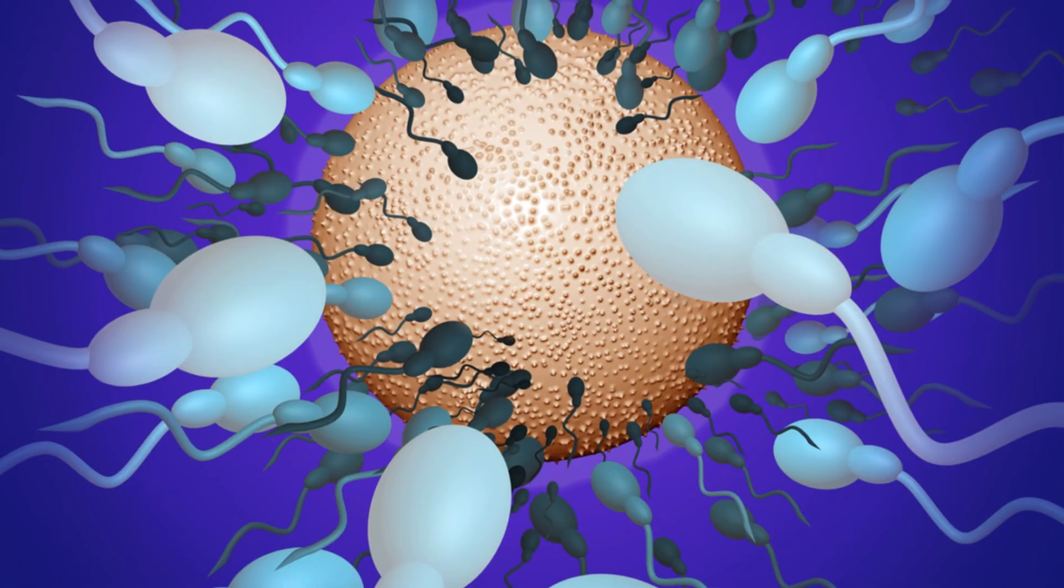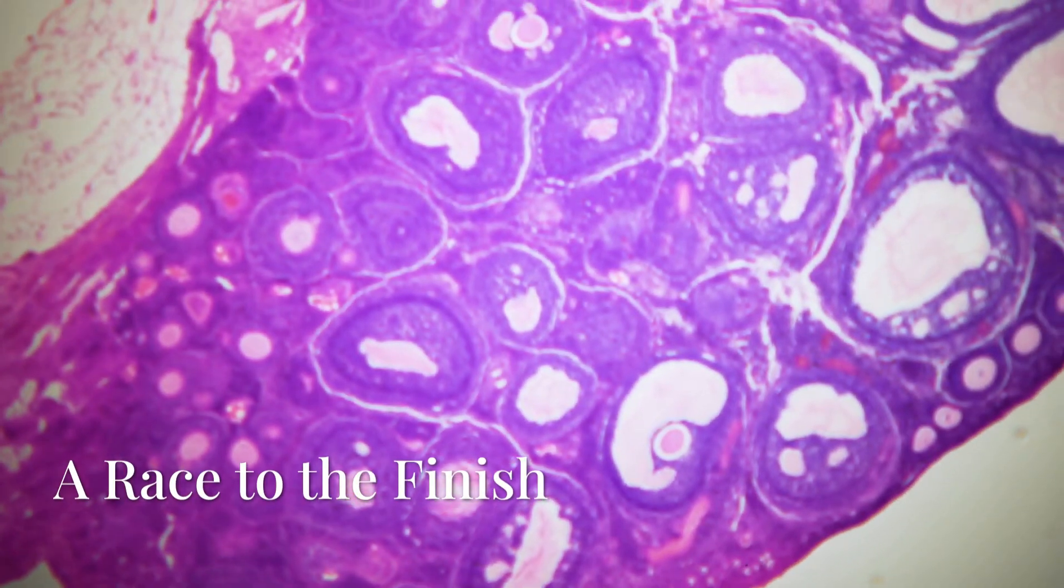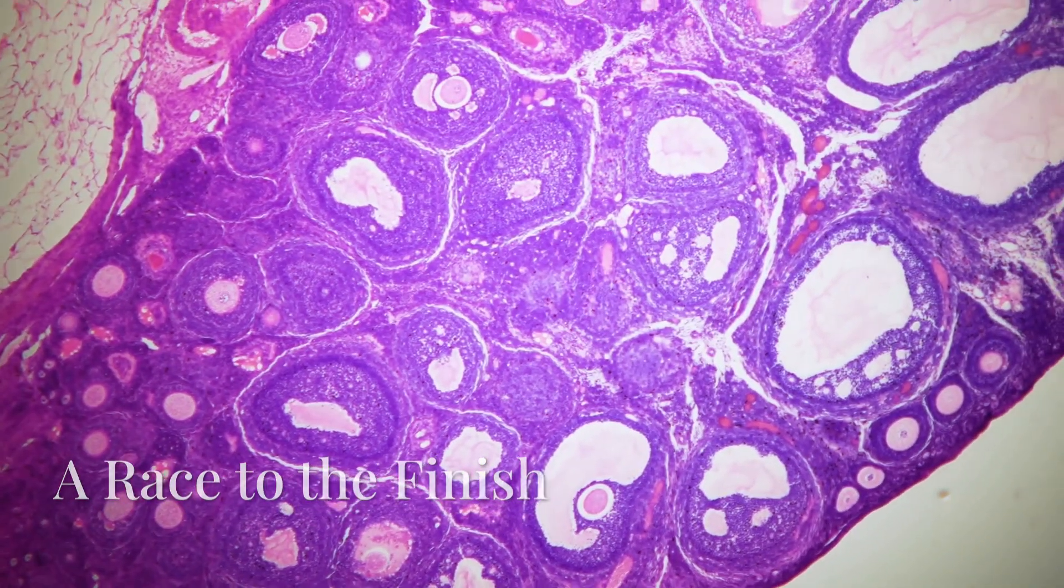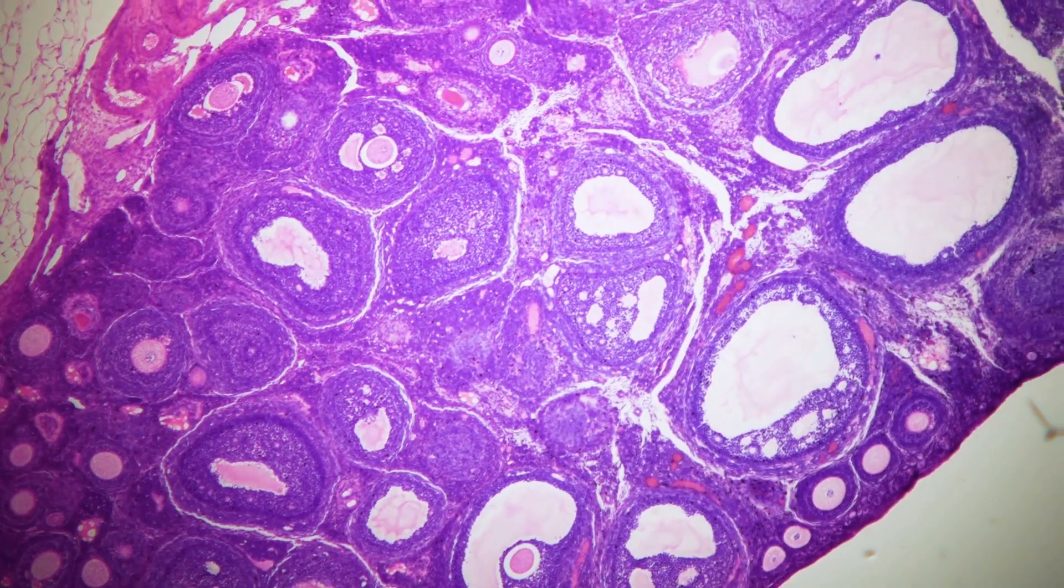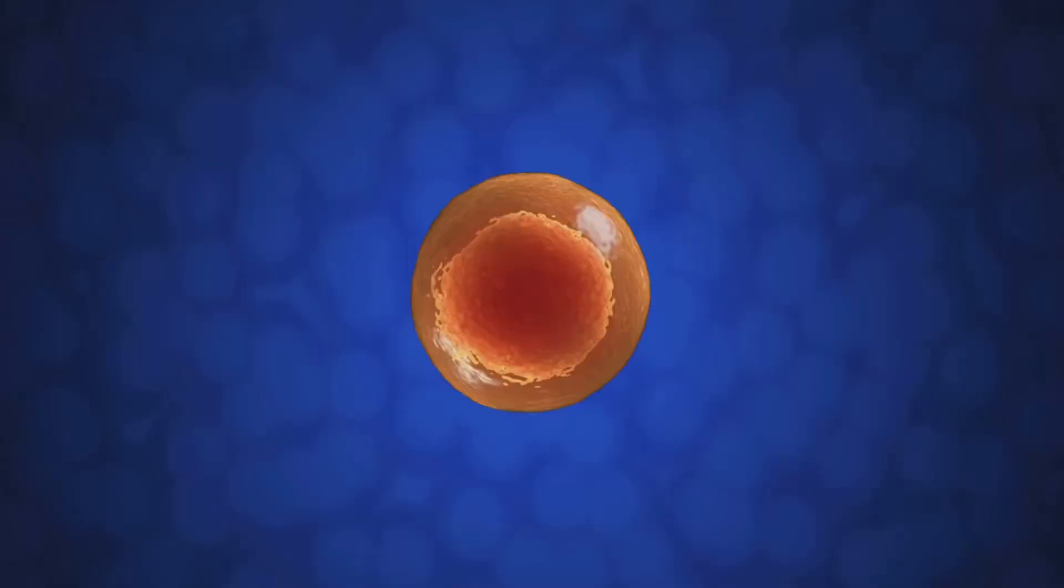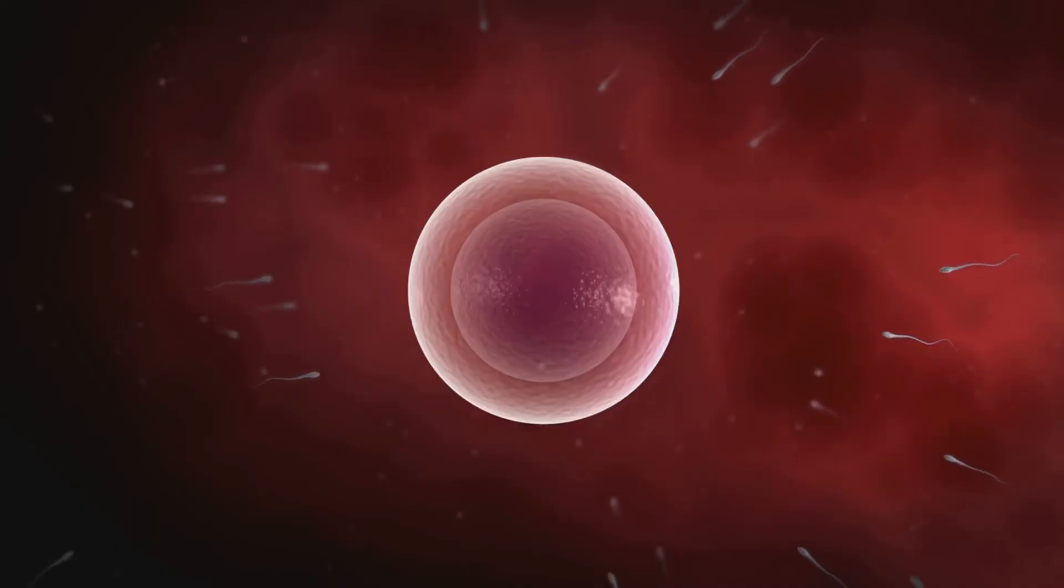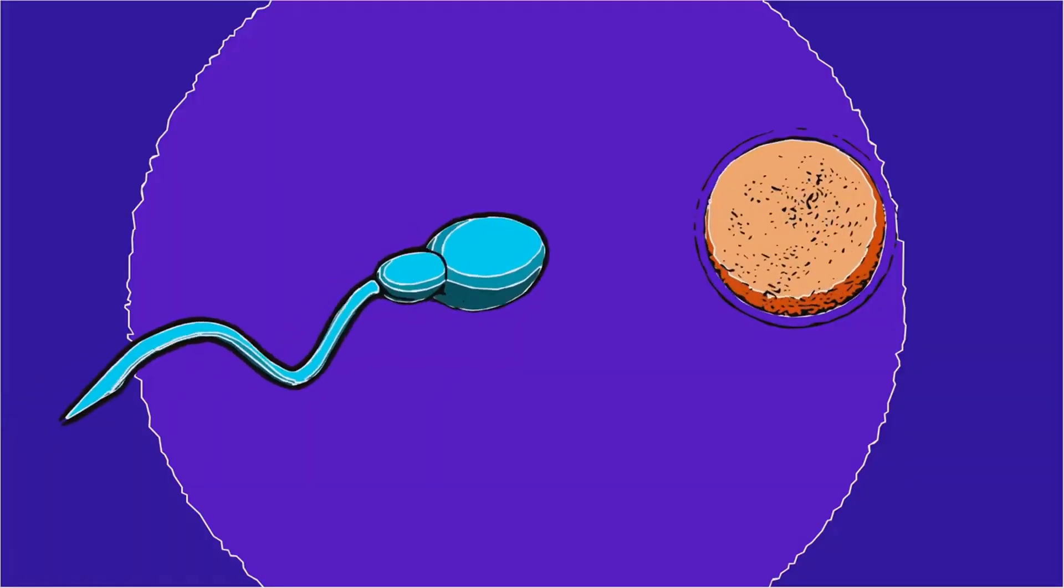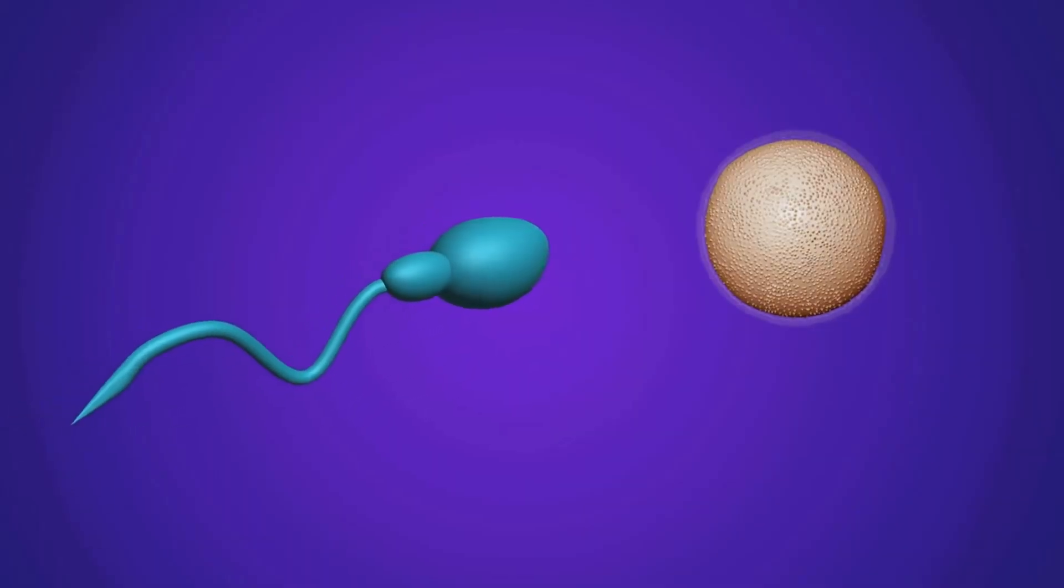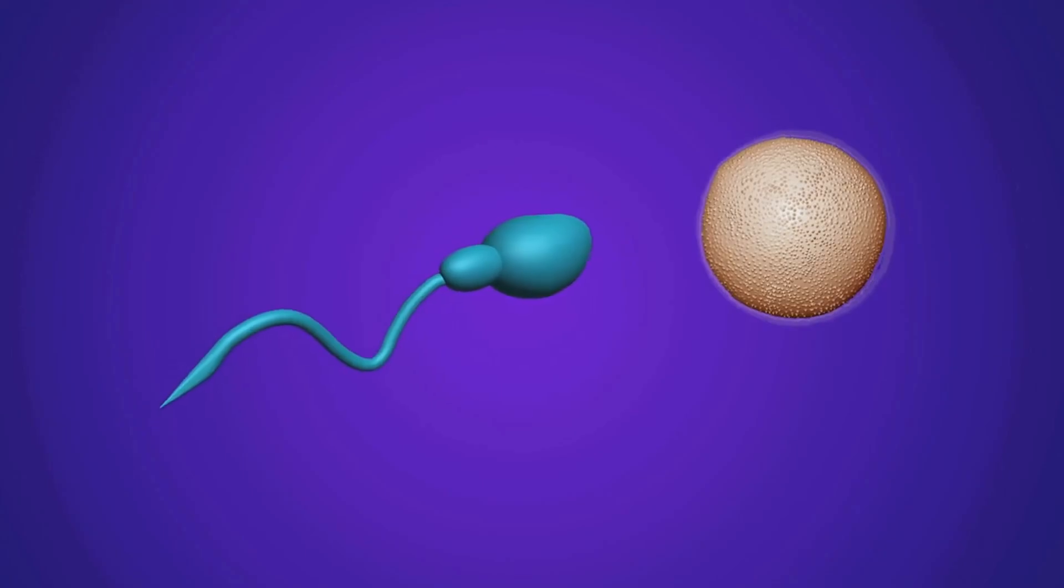But for those that do, a prize awaits. Deep inside the fallopian tube, a single egg waits. It's much larger than a sperm and it's surrounded by a protective layer. This is the final challenge. The first sperm to break through this layer will fertilize the egg. It's a race against time, and only the strongest and luckiest will succeed.